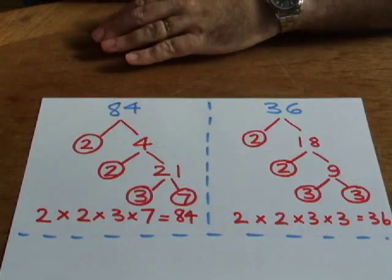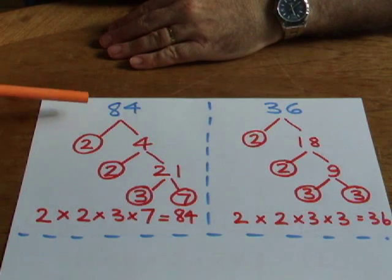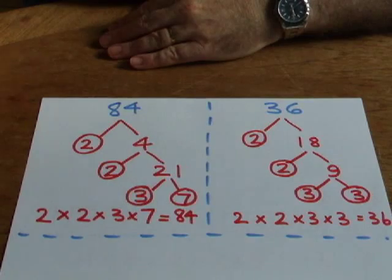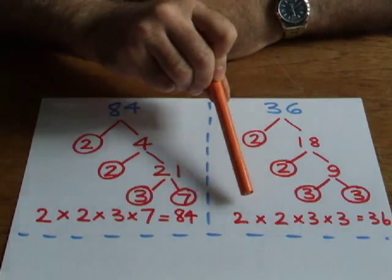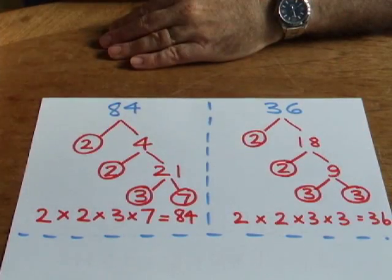We've seen through using the factor tree that the prime factors of 84 are 2, 2, 3, and 7. And the prime factors of 36 are 2, 2, 3, 3. Multiply them together gives us 36. Multiply those together gives us 84.